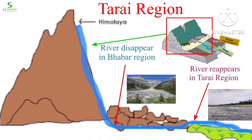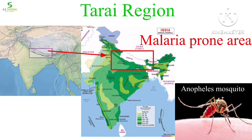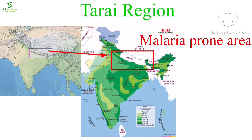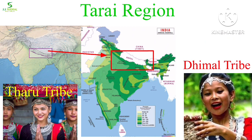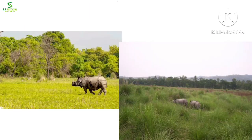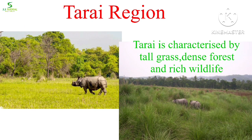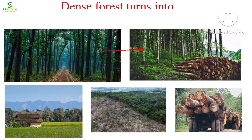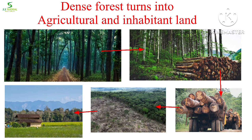Almost 18 rivers that flow underground in the Bhabar region reappear in the Tarai region. This region is not suitable for health as it receives high rainfall and malaria is very common. Before the 1960s, only Tharu and Dhimal indigenous people lived here as they have innate resistance to malaria. After the malaria eradication program using DDT in the 1960s, a large number of people settled here. Tarai is characterized by tall grassland, savannah, dense forest, and rich wildlife.